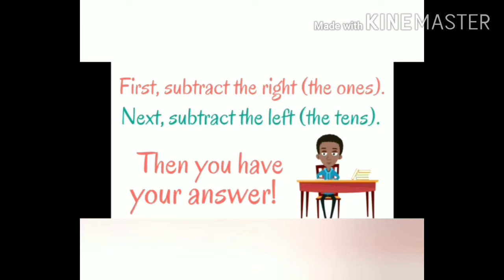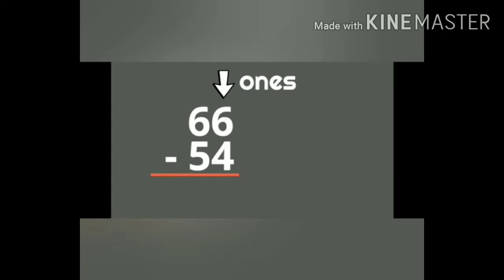Then you get your answer. What we call the answer in a subtraction? We call it the difference, and everyone should learn the spelling of difference. Now let's start doing the subtraction. We have to start our subtraction from ones place. In ones place we have 6 and 4. Above we have 6 and below we have 4. If we take away 4 from 6, what remains?